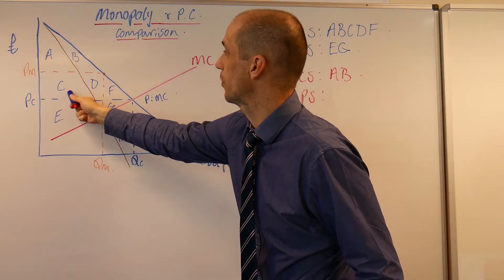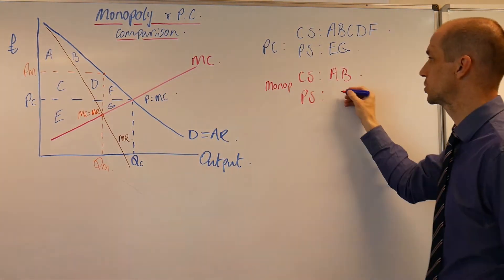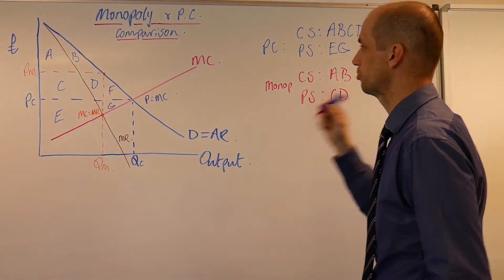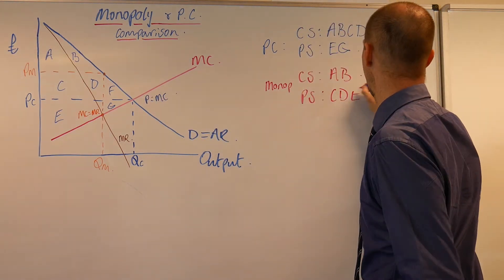Meanwhile, areas C and D now become producer surplus, as does area E.